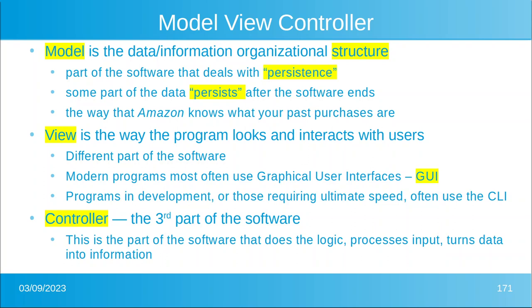View is the way that the program looks and interacts with users — this is a different part of the software. Modern programs for the end user most often use graphical user interfaces. Programs that are in development, or those requiring super speed — like decoding bitcoins — will use the CLI, or command line interface.